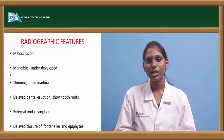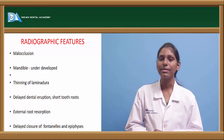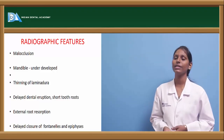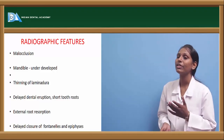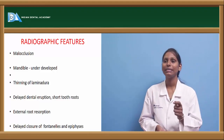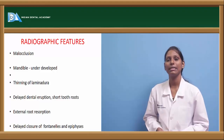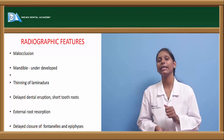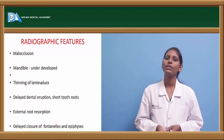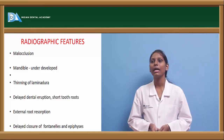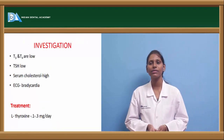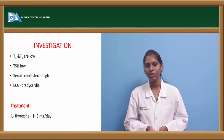Radiological features of hypothyroidism include malocclusion, underdeveloped mandible, thinning of lamina dura, delayed dental eruption, short tooth roots, external root resorption, and delayed closure of fontanelles and epiphyses.